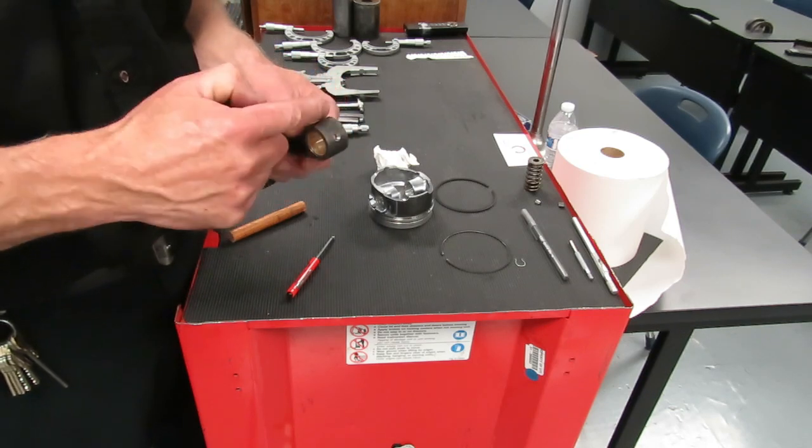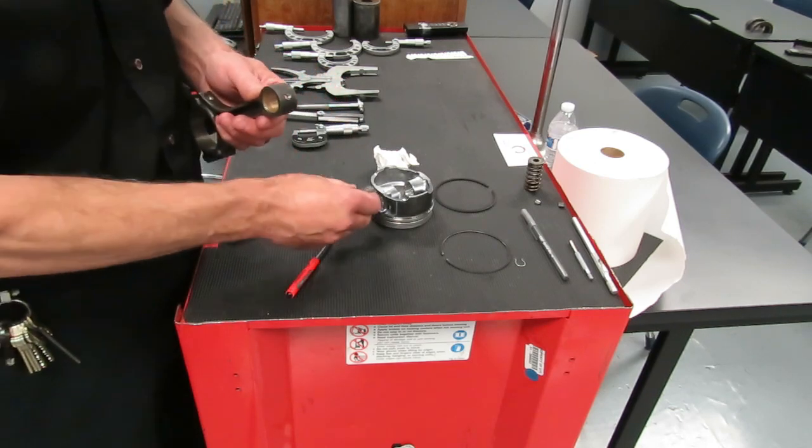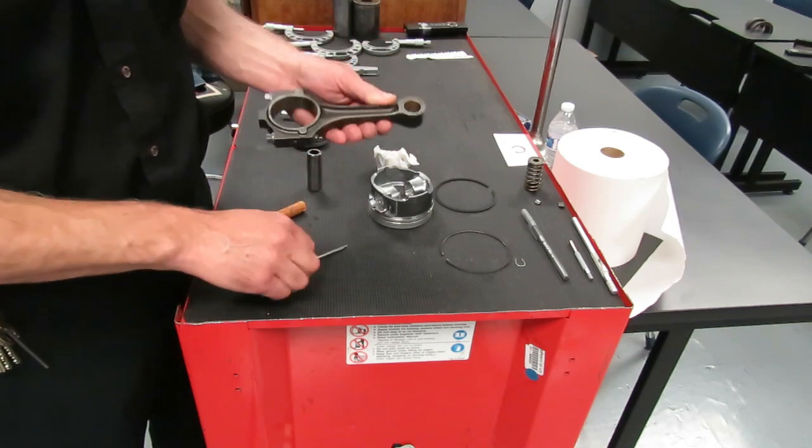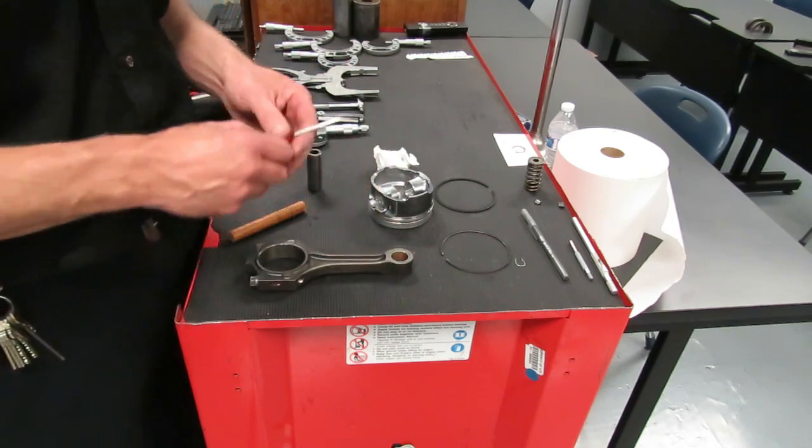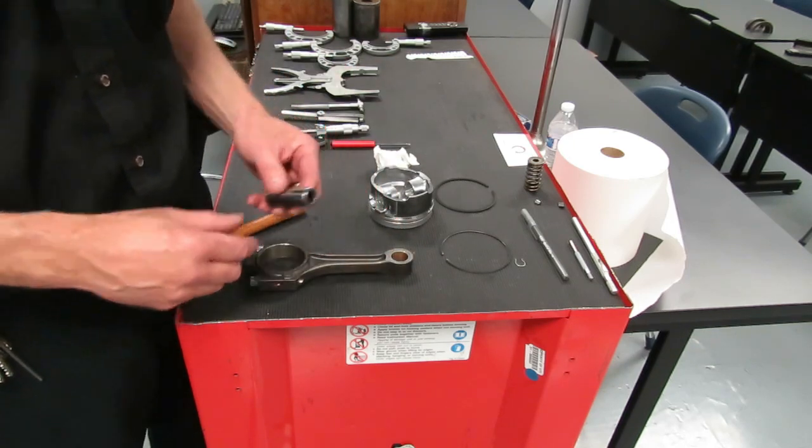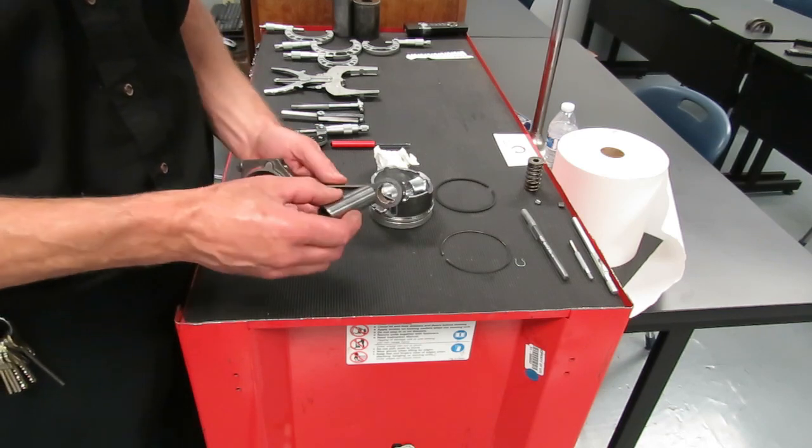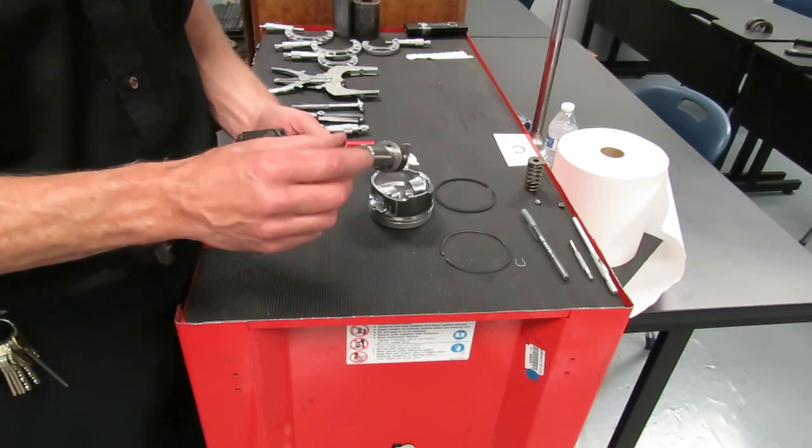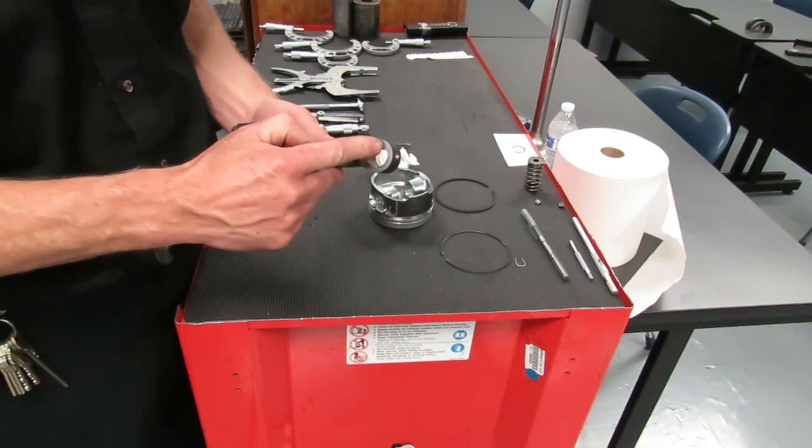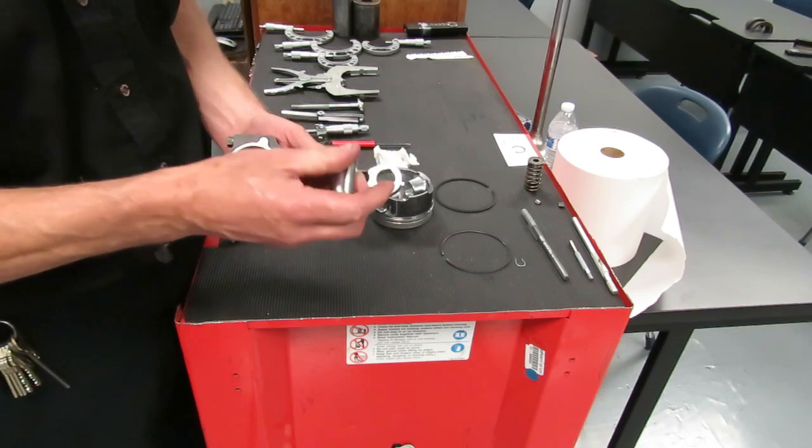A semi-floater is going to be pressed into the rod by a machine shop and it only floats in the piston. All right, now we need to check and make sure that our piston pin to piston bushing, there's a bronze bushing in there, is correct.